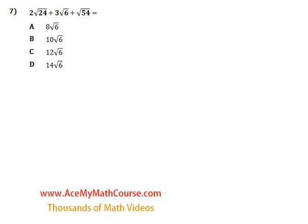Question 7. So we have 2 root 24 plus 3 root 6 plus the root of 54. And we want to simplify this as much as possible.